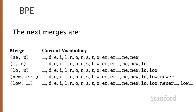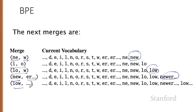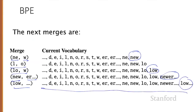We keep moving on in that way. We next merge NE with W, producing a new token NEW; then L with O, producing LOW; then NEW with ER-underbar, producing a new token NEWER-underbar; and LOW with underbar, giving the token LOW-underbar. So now we have a vocabulary with a whole set of new tokens added to it — that's our final training vocabulary.